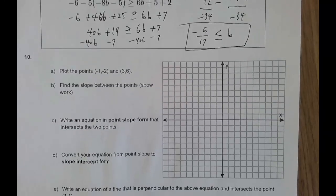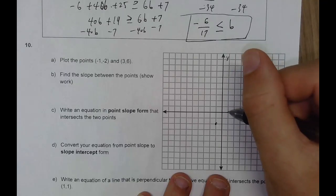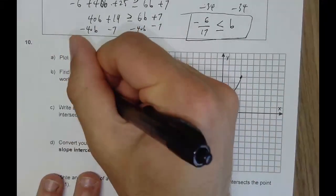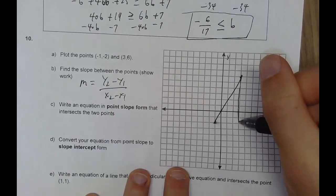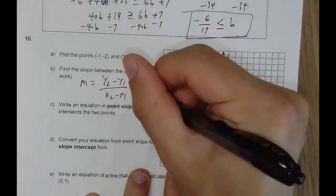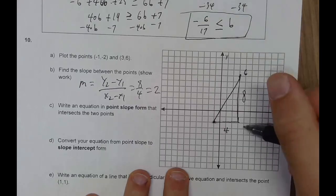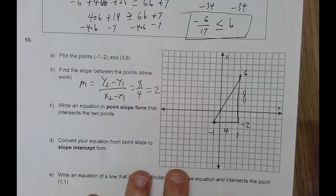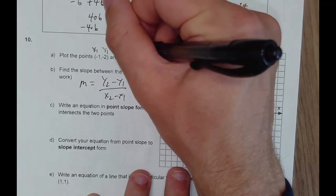Number 10. Plot points negative 1, negative 2 and 3, 6. We want the slope between these two. Slope m = (y2 − y1)/(x2 − x1). Visually, the rise is 6 − negative 2 = 8 and the run is 3 − negative 1 = 4, so slope = 8/4 = 2. Label x1 = negative 1, y1 = negative 2, x2 = 3, y2 = 6 and plug into the formula to confirm.